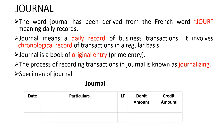The word journal has been derived from the French word 'jour' (J-O-U-R), meaning daily records. Journal means a daily record of business transactions. It involves a chronological record of transactions on a regular basis. Journal is a book of original entry or prime entry because transactions are first entered in the journal and then posted to the ledger.